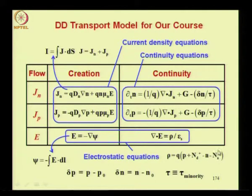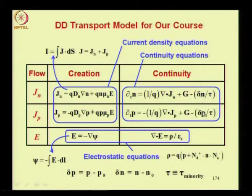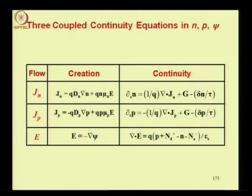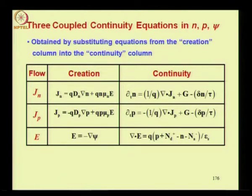The excess hole concentration is equal to the hole concentration minus the value under equilibrium, and similarly for the electron concentration. We let delta-n and delta-p be different, though in most situations these two quantities will be approximately equal and quasi-neutrality will hold. You can reduce these six equations to three continuity equations coupled to each other in n, p, and psi — reducing the six variables n, p, j_n, j_p, E, and psi to just three.